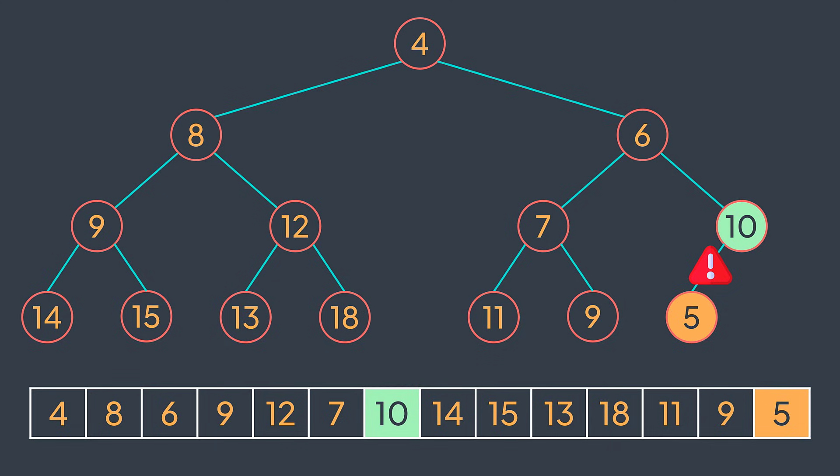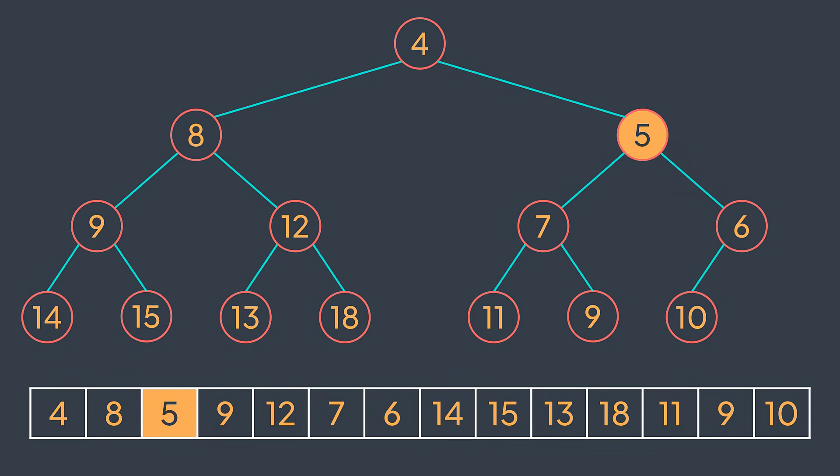To respect the heap property, we need to apply an operation called sift. We have two sift operations: sift up and sift down. When the node that we want to reposition is at the bottom, we apply sift up; and when it's at the top, we apply sift down. In sift up, we keep swapping the node with its parent while it is smaller. For example, with the five here, it's smaller than its parent so we swap. It's still smaller than its parent so we swap again. It's not smaller anymore, so we stop — the heap property is respected again.